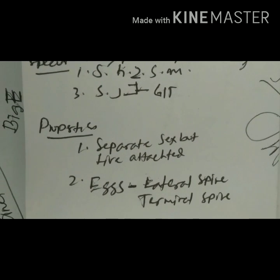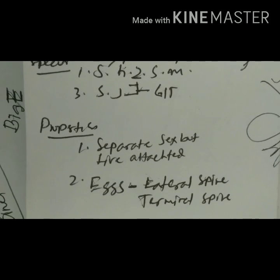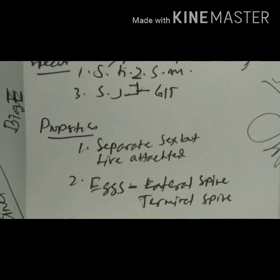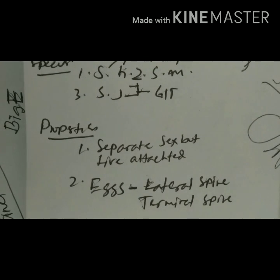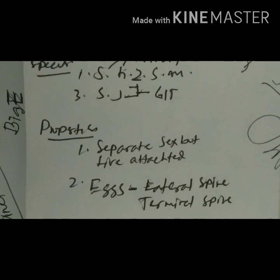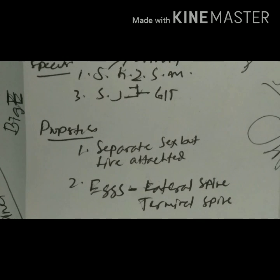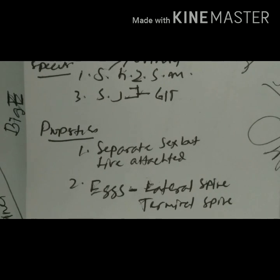The blood flukes or trematodes have different properties from other trematodes like liver flukes or intestinal flukes. There is a big difference between the blood flukes and the others. Among the important properties of Schistosomes: we know that trematodes do not have separate sexes — they are hermaphrodite — but in the case of Schistosomes they have separate sexes: male and female. They live attached together, and the male worm has a gynecophoric canal in which the female resides.